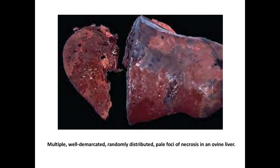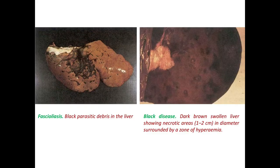In another picture, on the left side you can see a Fasciola or liver fluke infected liver, where black parasitic debris can be found in the liver. And in the right side picture there is black disease — a dark brown swollen liver showing necrotic areas of 1 to 2 cm diameter surrounded by a zone of hyperemia.